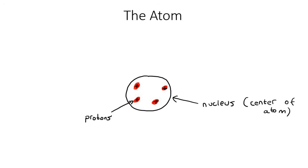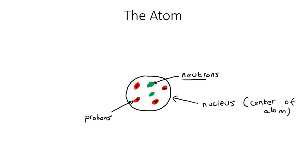Then I'm going to make some green things — let's put two. These ones are going to be called neutrons. They are not positive or negative — they are neutral. Neutral means they have no charge.